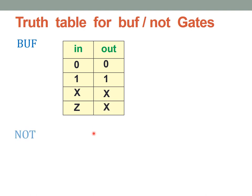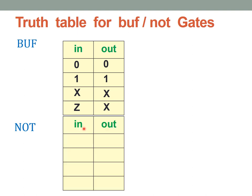Now let us see the truth table of a not gate with a single input and a single output. The value set for the input is 0, 1, X, and Z. The not gate complements the input applied. If the input is 0, the output is 1; if the input is 1, the output is 0. For the remaining two conditions where the input is unknown or high impedance, the output will be unknown. These are the truth tables of the buffer and the not gates.